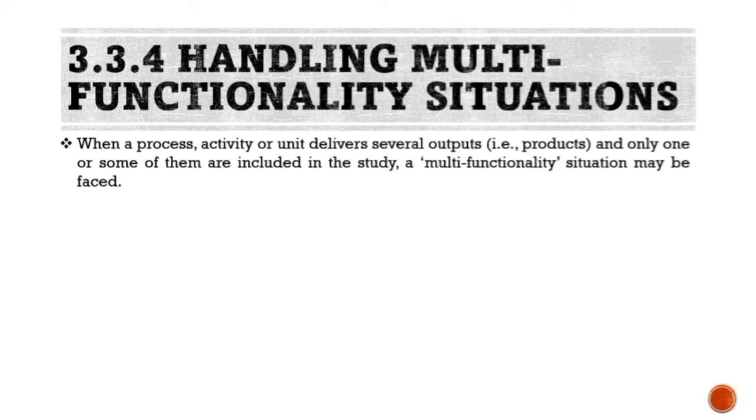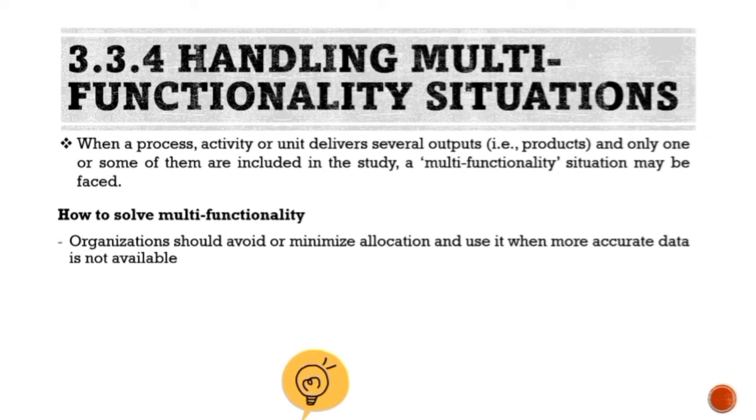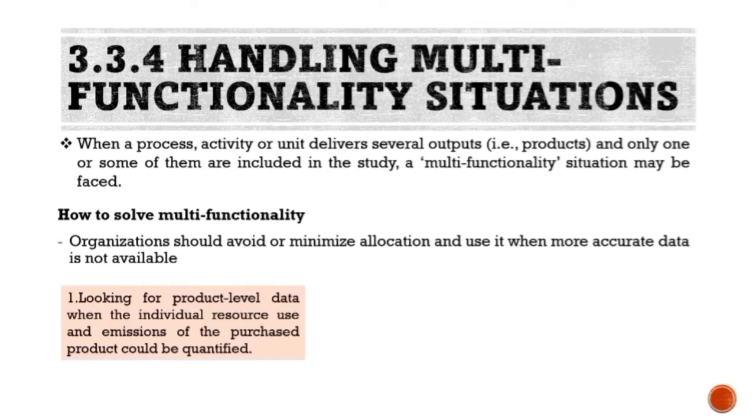When a process, activity or unit delivers several outputs and only one or some of them are included in the study, a multifunctionality situation may be faced. So, how can we solve the multifunctionality situations? Firstly, organizations should avoid or minimize allocation and use it only when more accurate data is not available by looking for product-level data when the individual resource use and emissions of the purchased product could be quantified.